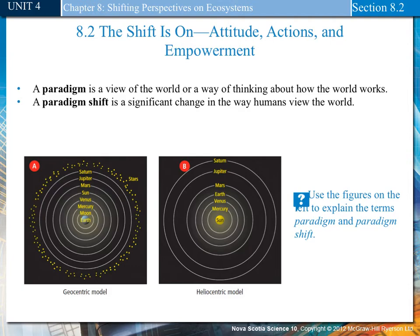A paradigm is a view of the world or a way of thinking about how the world works. A paradigm shift is a significant change in the way humans view the world. For example, the geocentric model held that the Earth was the center of the universe, with the Moon, Mercury, Venus, Sun, Mars, Jupiter, Saturn, and stars in the furthest section. Then the heliocentric model, developed by Nicholas Copernicus, showed the Sun as the center of the solar system, followed by Mercury, Venus, Earth, Mars, Jupiter, and Saturn. This model was accepted by the scientific community and caused a paradigm shift in thinking about the structure of the solar system.